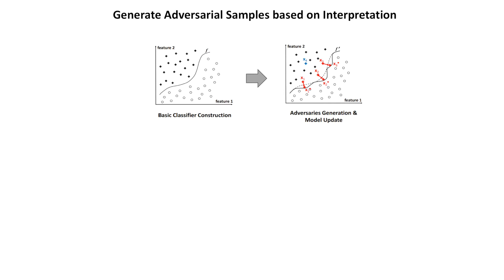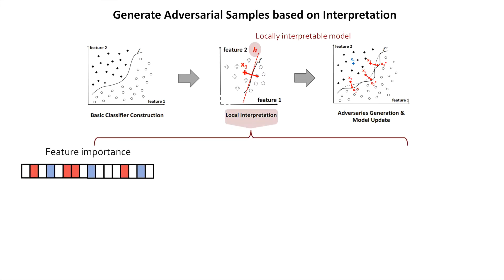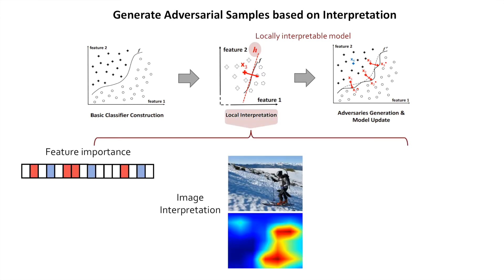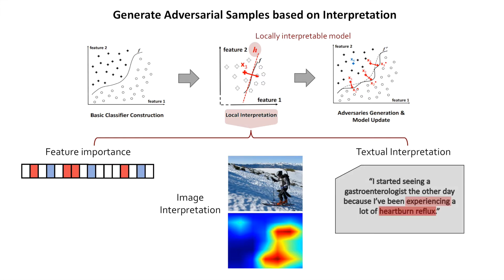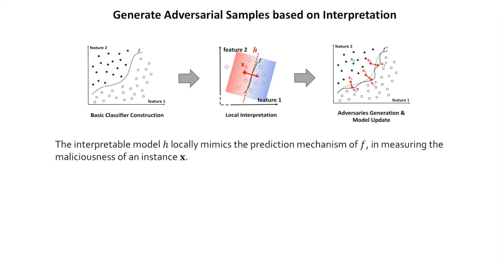For a given data instance, different evolution directions may cause different threats to the target model. Greater threat is posed if we know how the model works in classifying the instance. This naturally reminds us of using local interpretation to determine how adversaries should evolve. Local interpretation is achieved by building a local interpretable model H around the given instance, which mimics the working mechanism of the original model in measuring how malicious an instance is.